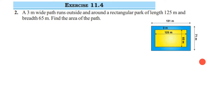What we have to do here is we have given the garden which is a rectangular park of length 125 meter and breadth 65 meter, and there is a path which is built around it and outside the rectangular park which is 3 meter wide. The blue color portion you can see is the path — we have to find out its area.